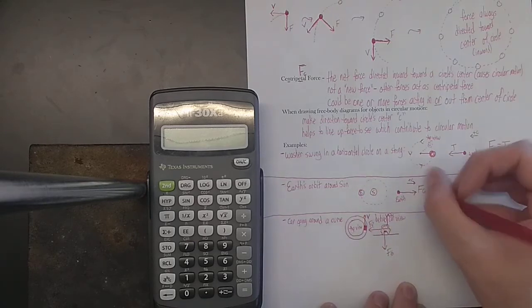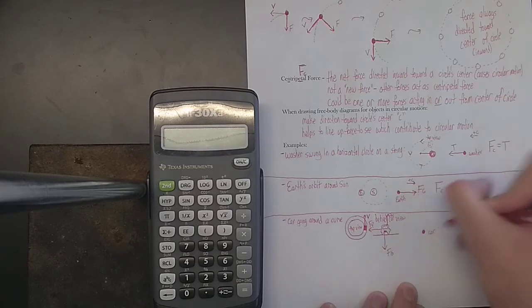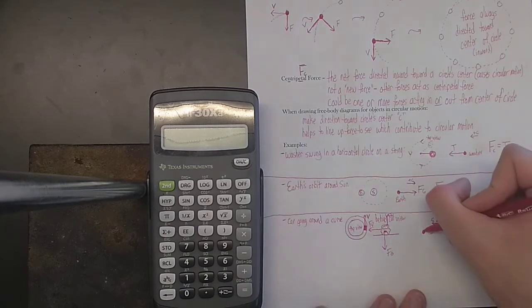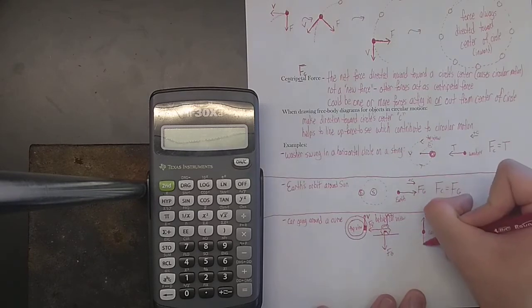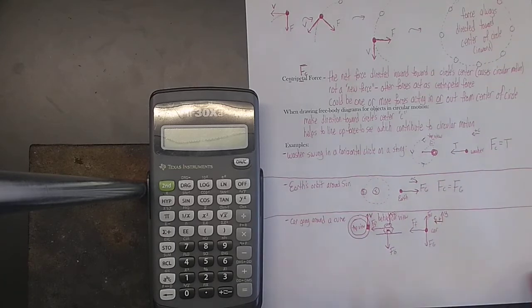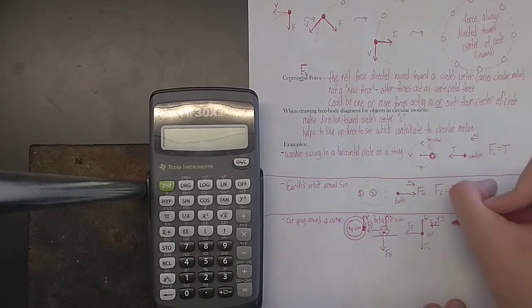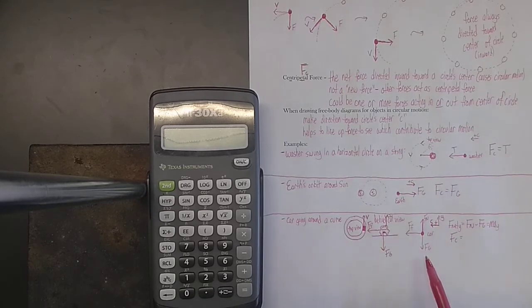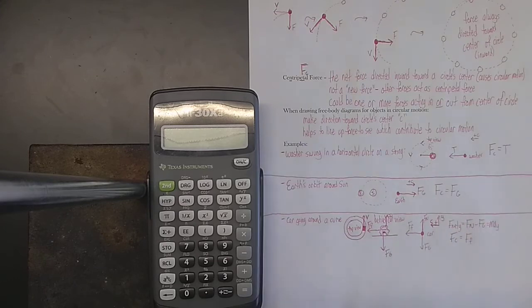Let me draw a real free body diagram for the car. There are two important directions this time: I'll call this one the y direction and this one the C direction, because that's the direction towards the center of the circle. We have a normal force pointing up, a gravitational force pointing down, and a force of friction to the left allowing the car to turn. In the y direction: Fn minus Fg equals M times Ay. The only force that points towards the center of the circle is the force of friction - that, therefore, is my centripetal force.